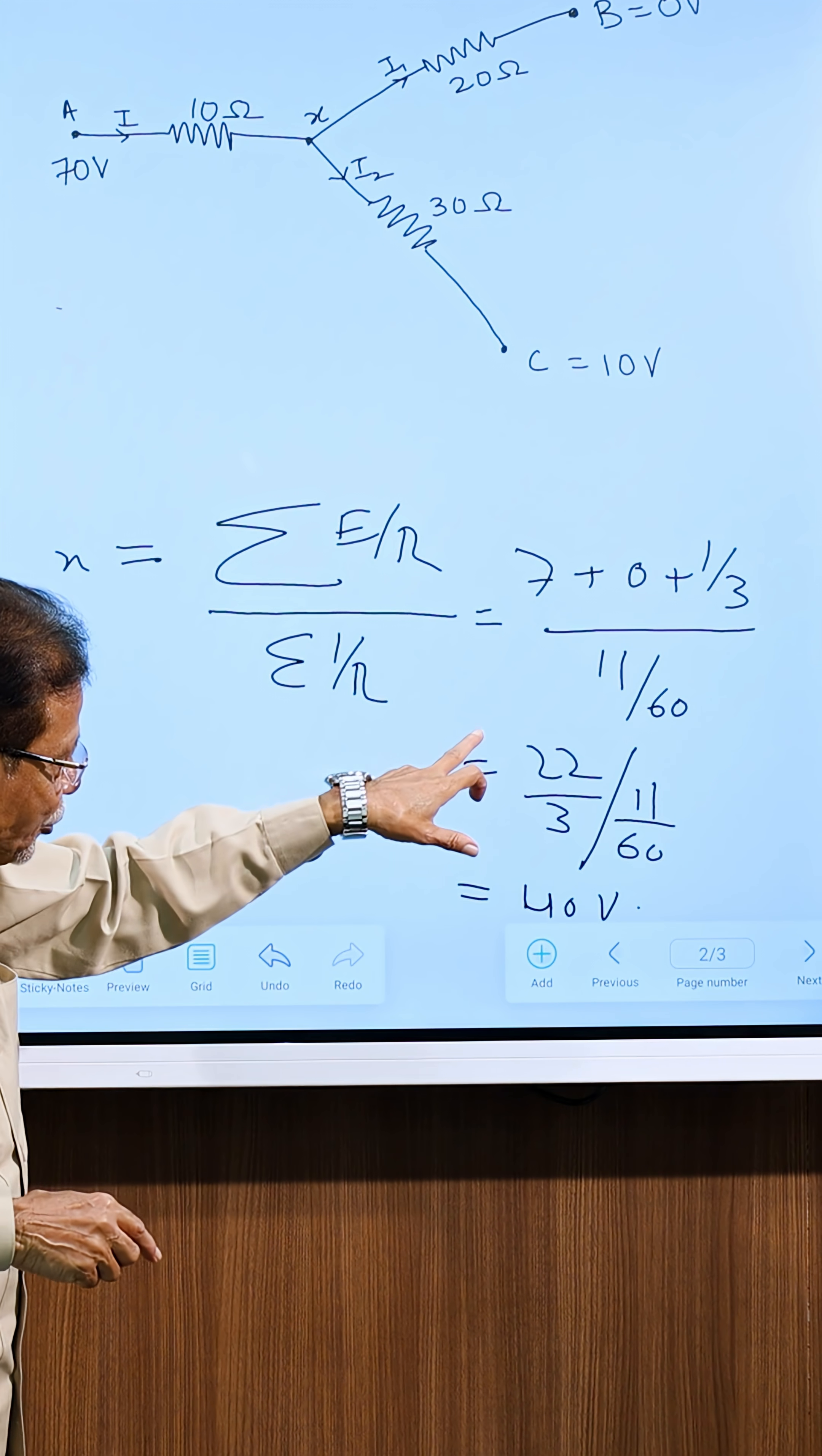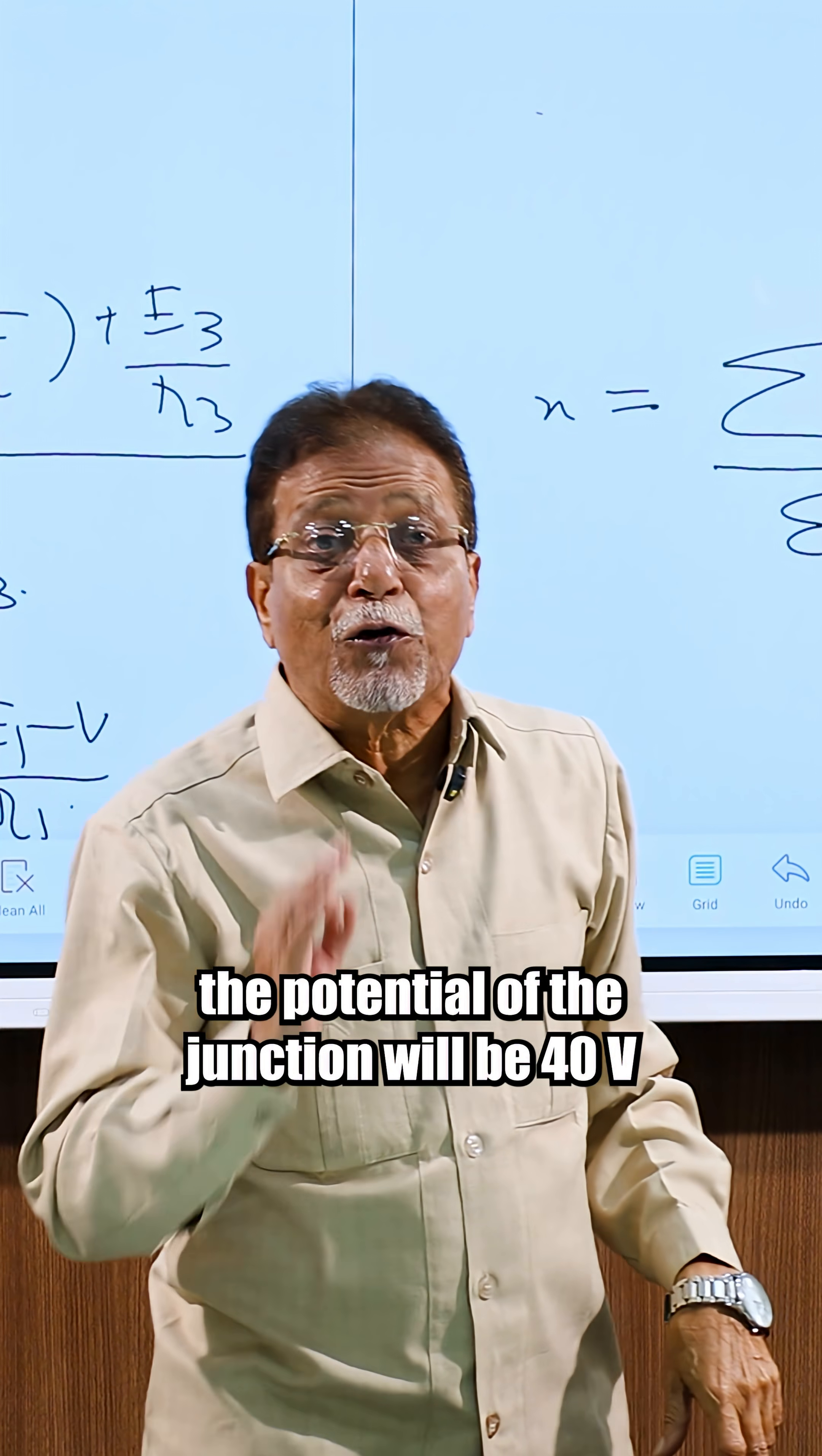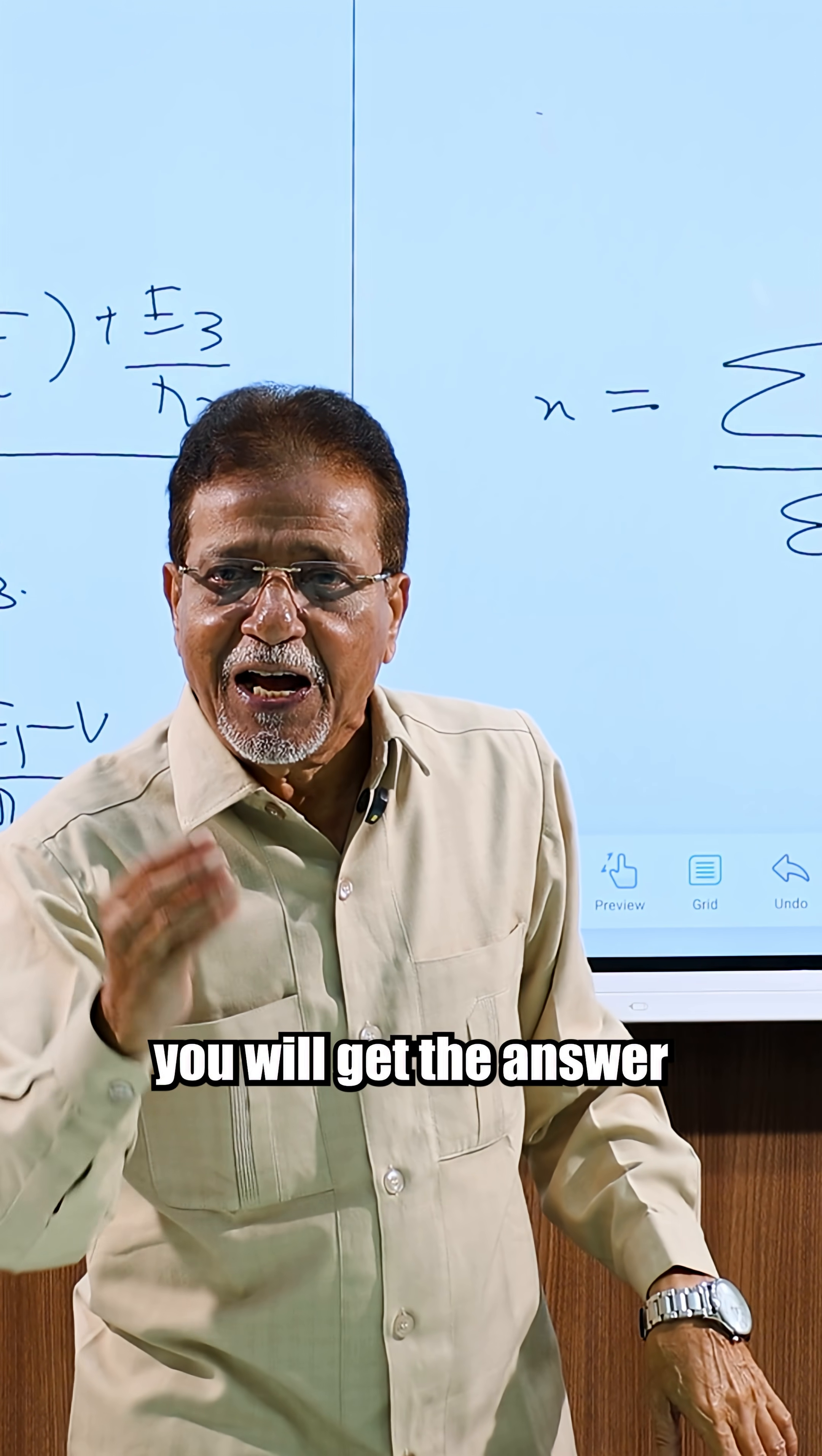You will solve it. 22 by 3 divided by 11 by 60, that you will get. The potential of the junction will be 40 volts. Just keep the values of E and R and you will get the formula. You will get the answer.